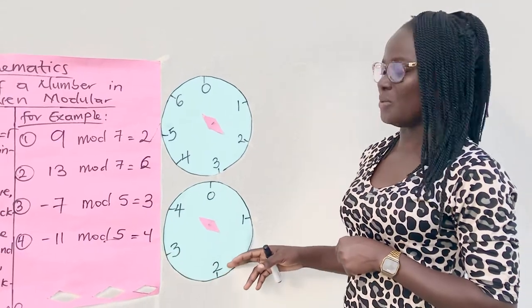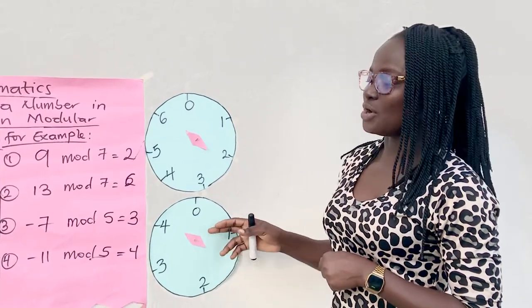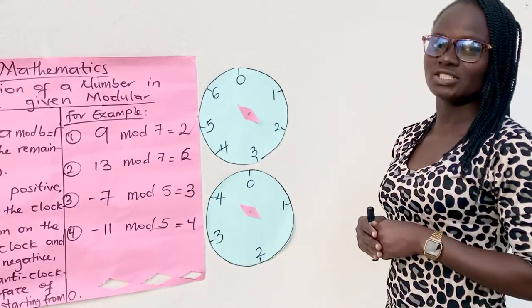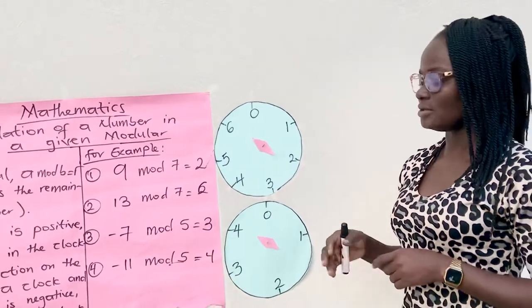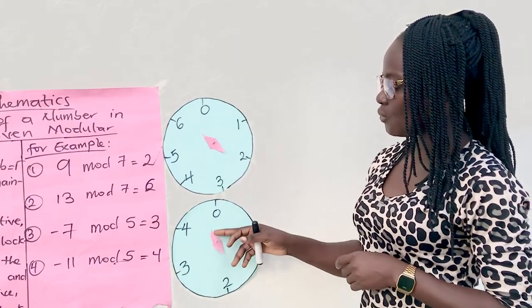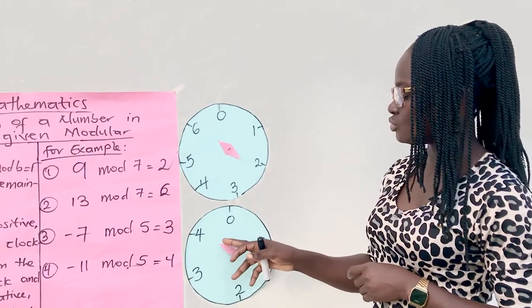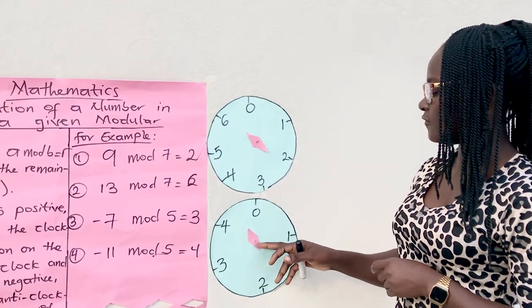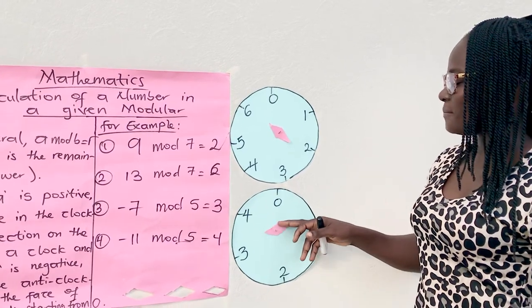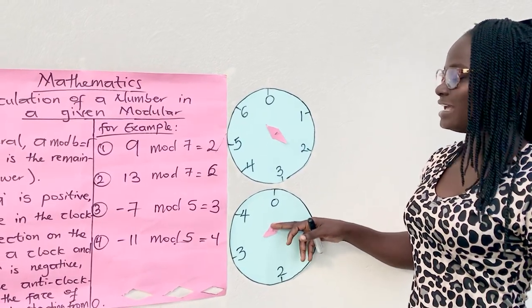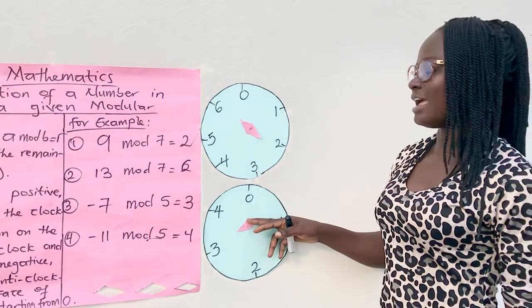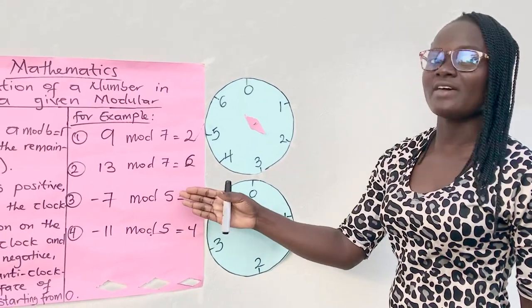We are going to move in the anticlockwise direction. How many times? Seven times, starting from zero. Let's go through together. One, two, three, four, five, six, seven. Perfect. We landed on three. It means that negative seven mod five is three.